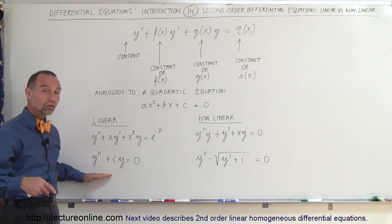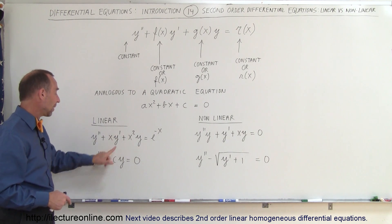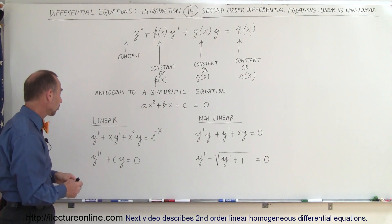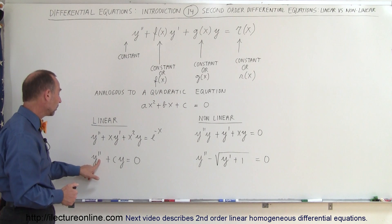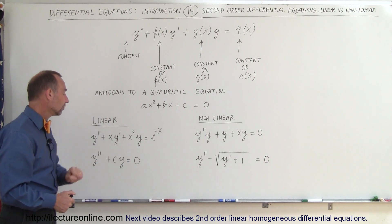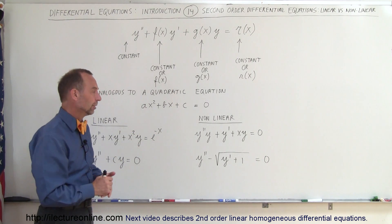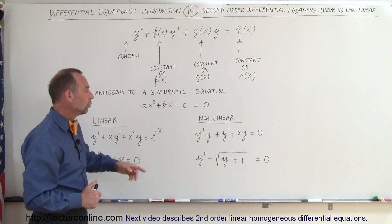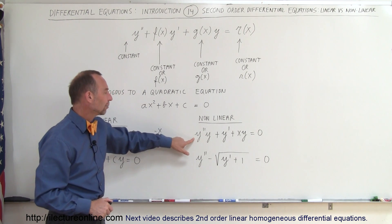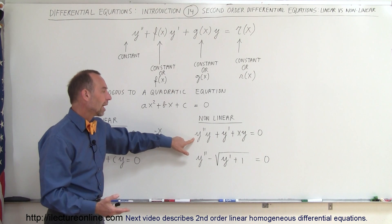This is also a linear second order equation. Even though we're missing the y prime term, this is still a linear second order differential equation — we have a y double prime and a y equal to zero. Over here, we have a nonlinear equation. Notice that we have a function of y multiplied times the y double prime, and that makes it nonlinear.